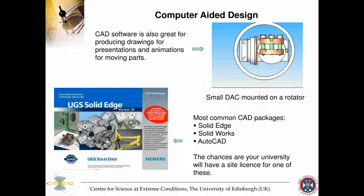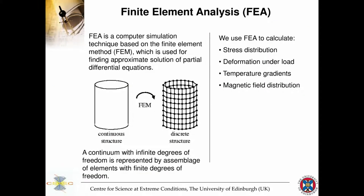CAD also allows you to see parts in motion. In this diagram, an annotator built for a magnet shows the bore of the magnet with a pressure cell mounted on it. Running the animation, you can see the pressure cell turning on its support and confirm that it doesn't run into the wall of the cryomagnet. Common packages include Solid Edge, SolidWorks, and AutoCAD — most universities have access to these licenses through package deals.